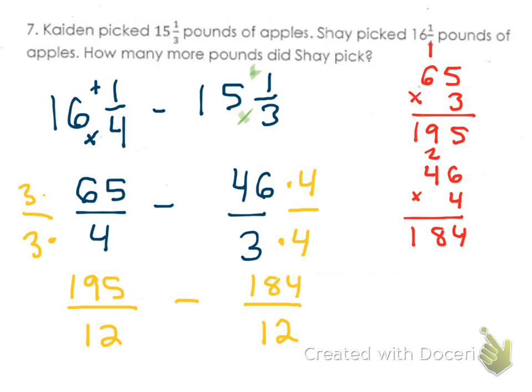Well, 195 minus 184 is 11 over 12. So that means that Shea picked 11 twelfths more pounds of apples than Caden did. Okay, and we would want to write that out in a complete sentence. But that would be our answer. That Shea picked 11 twelfths more pounds of apples than Caden did.